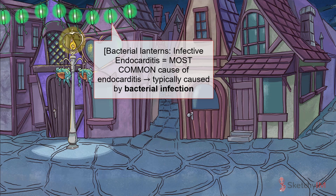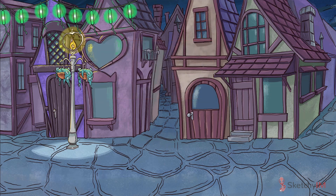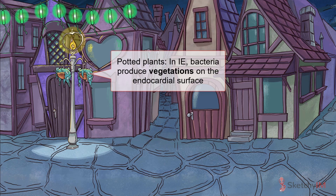IE is the most common cause of endocarditis and is usually caused by a bacterial infection — hence our recurring Sketchy symbol, the bacterial lantern strung up over this old timey town square. Regardless of the pathogen responsible, the pathogenesis of infective endocarditis is the same. Abnormalities on the valve surface provide a nidus for circulating microorganisms to land, forming a growth on the endocardial surface known as a vegetation. Vegetations are represented by these potted plants hanging from the lantern.